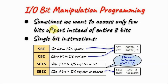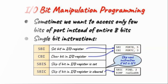Sometimes when we want to program the I/O ports of the Arduino, we want to access only a few bits of the port instead of the entire eight bits. We can do this using single bit assembly instructions: Set Bit in I/O Register (SBI) and Clear Bit in I/O Register (CBI). We also have two instructions that give conditional skips: Skip If Bit in I/O Register is Set (SBIS), and Skip If Bit in I/O Register is Cleared (SBIC).